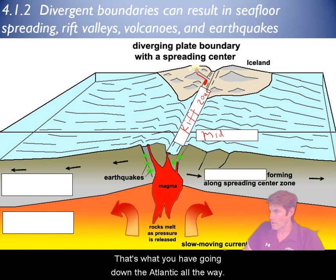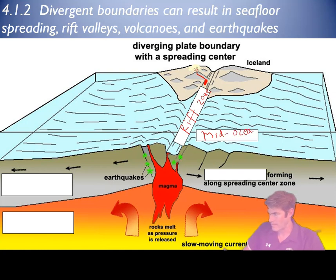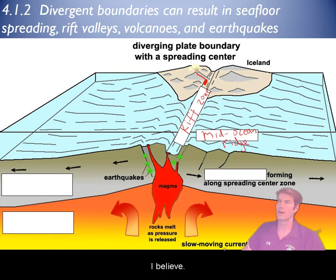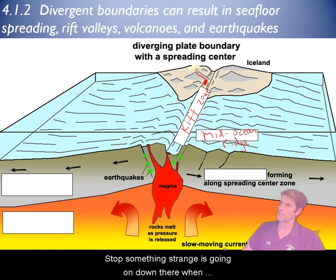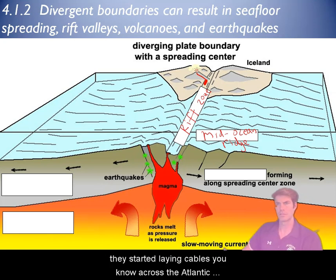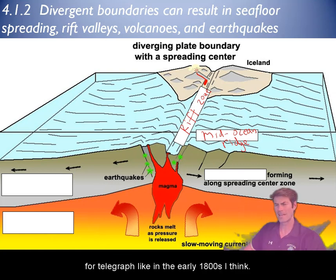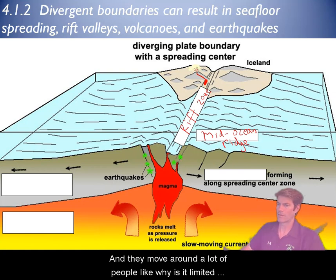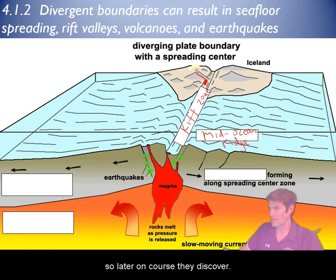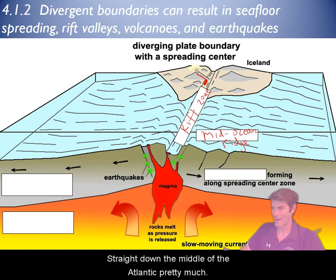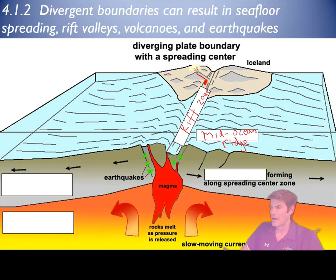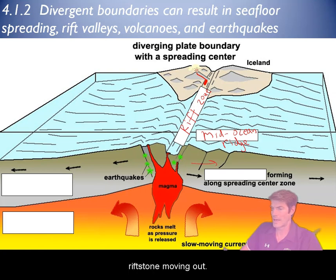That's what you have going down the Atlantic. It was discovered when they started laying cables across the Atlantic for telegraphs in the early 1800s. The cables moved around and people wondered why. Later, they discovered there's a huge ridge straight down the middle of the Atlantic. What that does is it creates new crust all along that rift zone moving out — new oceanic crust forming.